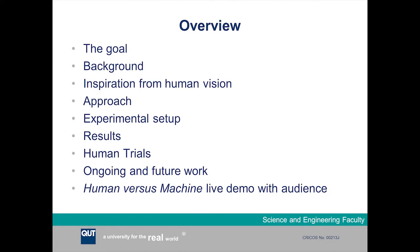During this talk, I'll talk about the overall goal of this place recognition research and give some background on where we're coming from. I'll talk about the inspiration we're drawing from human and primate vision and visual recognition, and describe the approach and how we've conveyed these concepts into the place recognition domain. I'll present the experimental setup and results, show some preliminary results from human trials where we let humans compete against the algorithm, and finally present some of the future work.